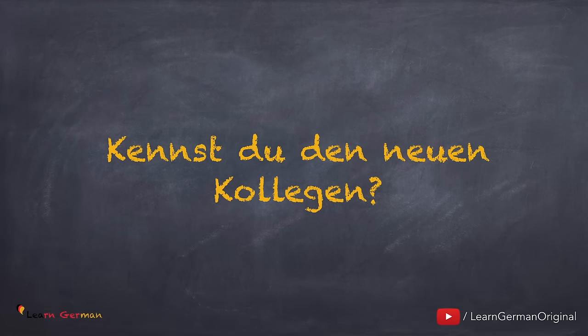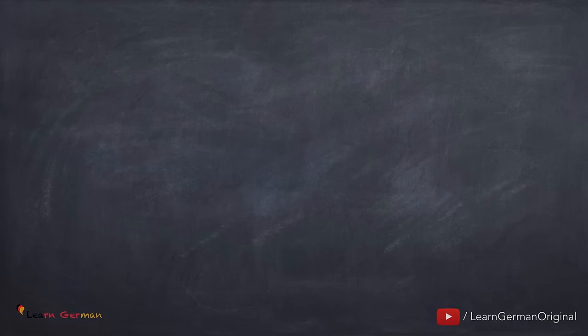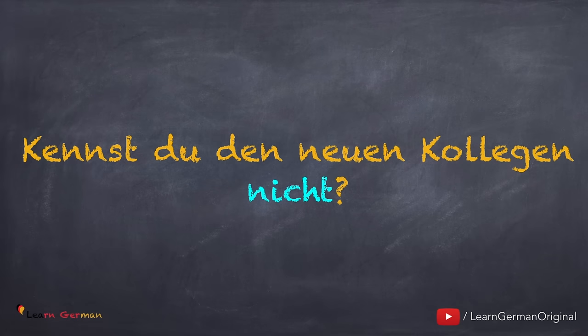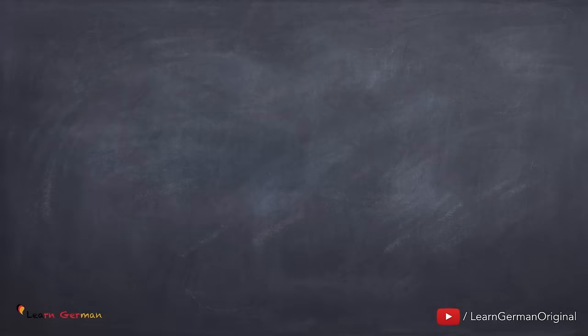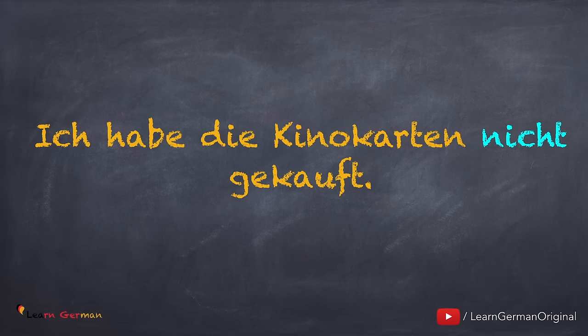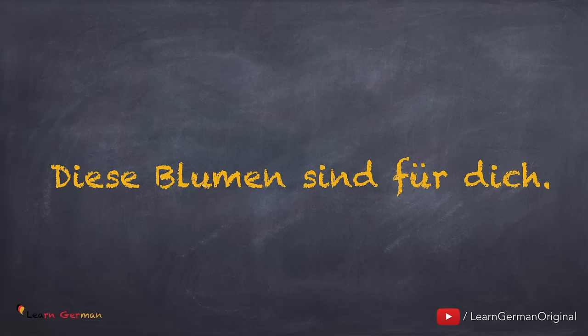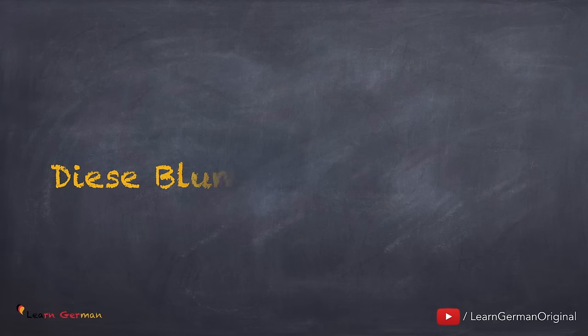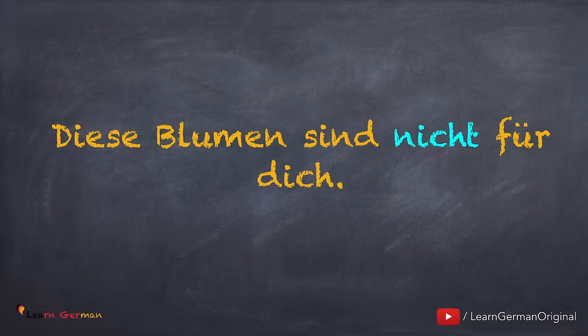Der dritte Satz ist: Kennst du den neuen Kollegen? Das ist ein ganz normaler Satz — hier steht 'nicht' ganz am Ende: Kennst du den neuen Kollegen nicht? Jetzt kommen wir zum nächsten Satz: Ich habe die Kinokarten gekauft. Hier steht das Verb im Partizip, also die Antwort ist: Ich habe die Kinokarten nicht gekauft. Jetzt der letzte Satz: Diese Blumen sind für dich. Hier ist die Antwort: Diese Blumen sind nicht für dich. Noch einmal: 'nicht' steht vor der Präposition.